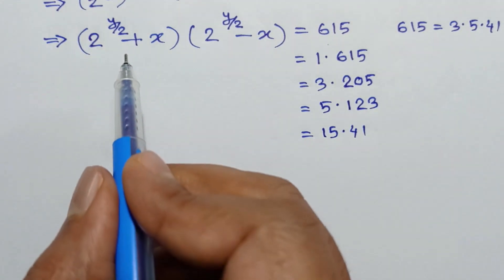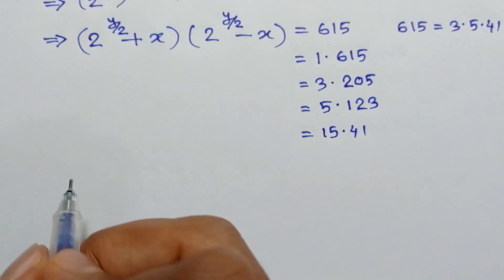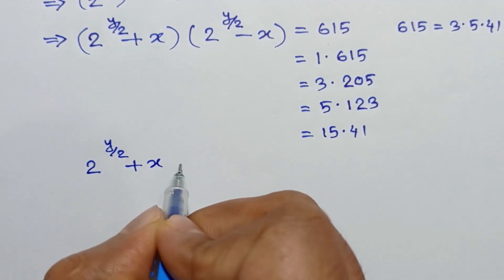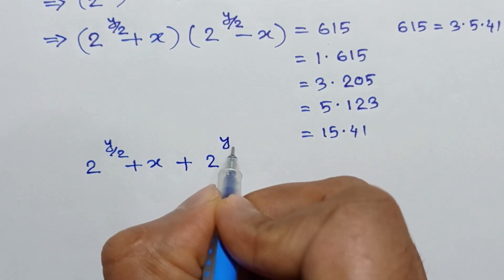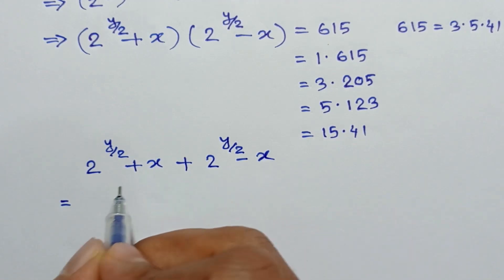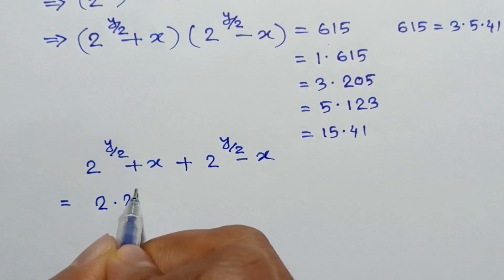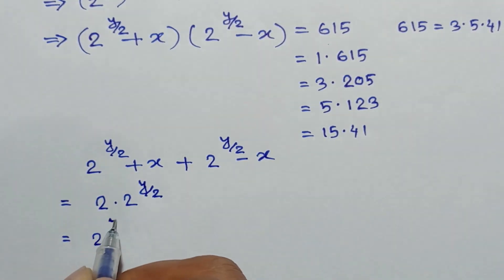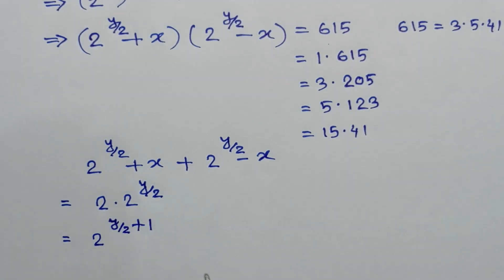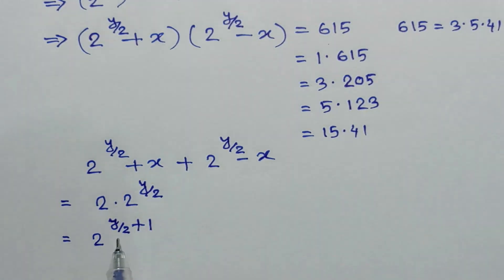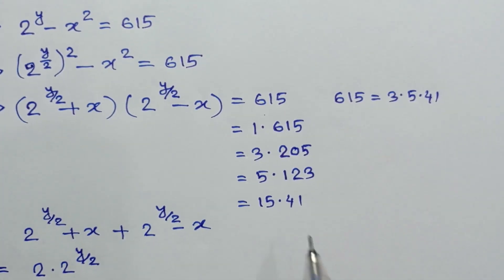The sum of each factor pair on the left side equals (2^(y/2) + x) plus (2^(y/2) - x). The x terms cancel out, leaving 2 times 2^(y/2), which equals 2^(1 + y/2). So we can conclude that the sum of each factor pair must be a power of 2.